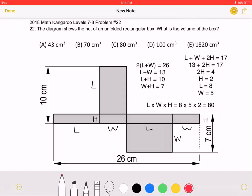This is the 2018 Math Kangaroo Level 7-8 Problem Number 22. The diagram shows the net of an unfolded rectangular box. What is the volume of the box?